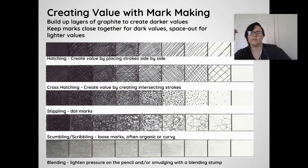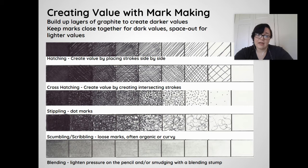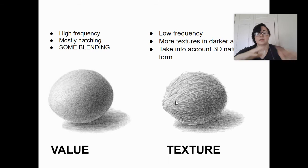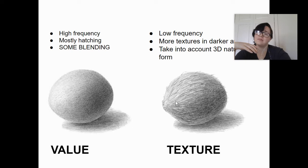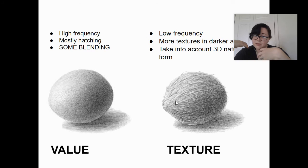A value scale creates a smooth transition from darkness to lightness. There's also one more technique I haven't covered yet: blending — and that's what we'll be doing to create our value scale. Hatching and cross-hatching are great for value with high frequency. For texture, use low frequency with more marks in darker areas and fewer in lighter areas. Also take into account the 3D nature of the form — where you place those marks matters. We'll have a sketchbook prompt at the end of the week on applying texture to 3D forms.